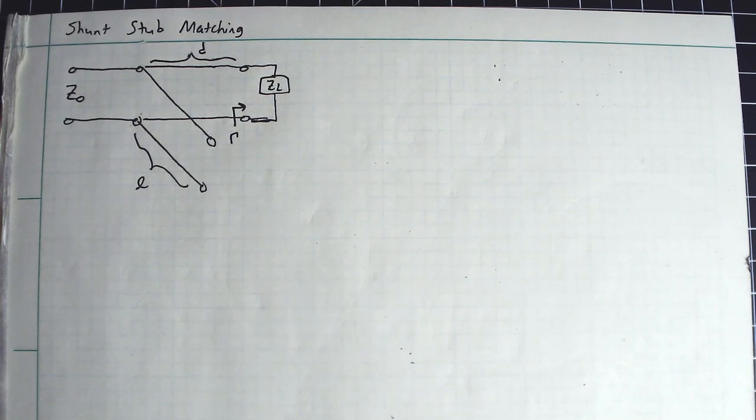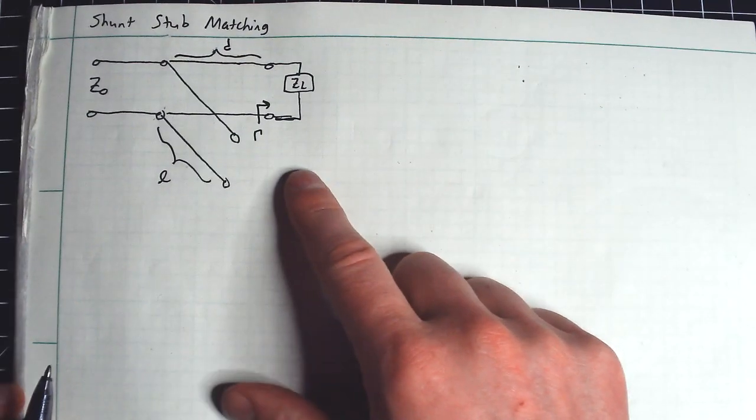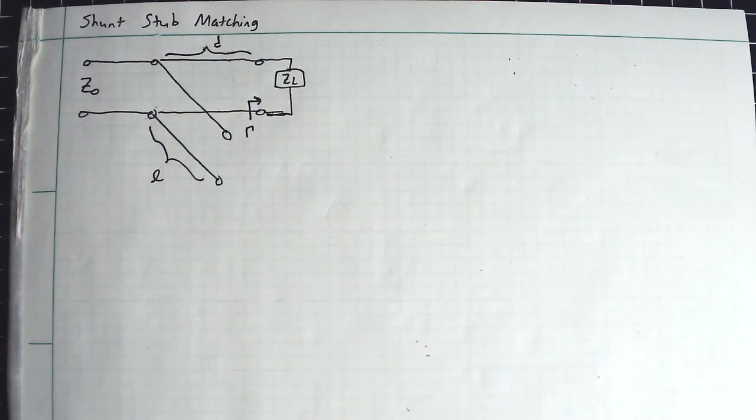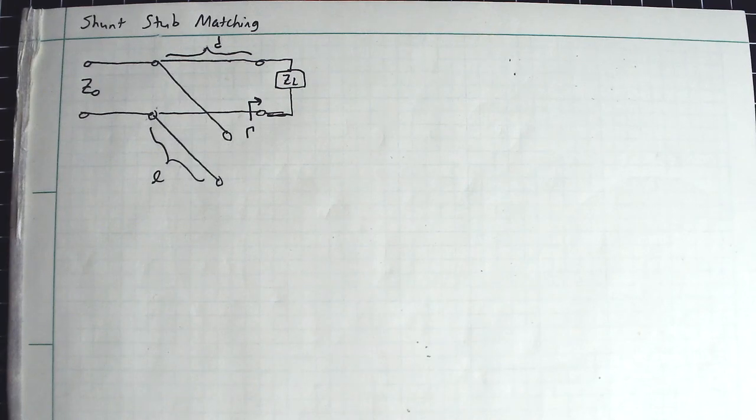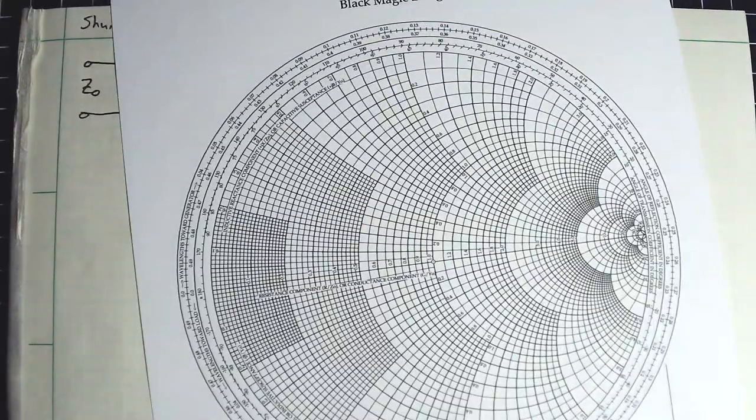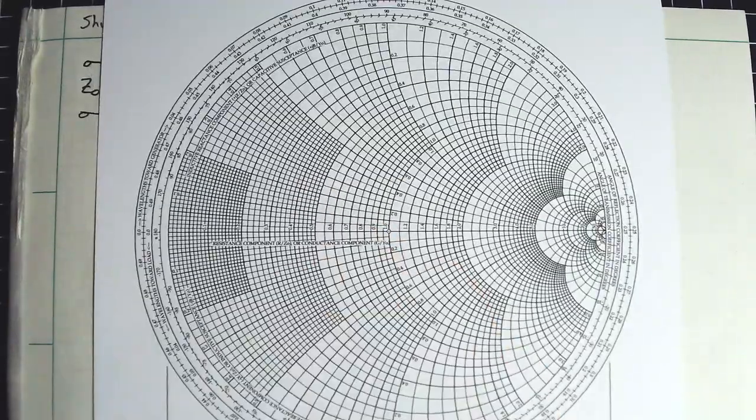Hey everyone, let's move on to shunt stub matching. We just went through a brief exercise on how series stub matching works. Let's take a look at how the equivalent ideas translate into the shunt stub. For this exercise, I got myself an actual Smith chart here.